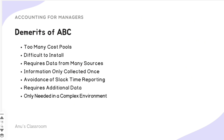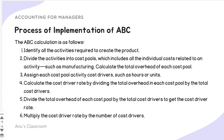Some demerits of ABC: since many activities go into delivering a final product, there will be many different cost pools, and assigning costs to each is very difficult. It requires data from many sources, avoidance of slack time reporting, and additional data collection. It is only practical in a complex environment. Overall, ABC costing is much more time-consuming and complex compared to traditional costing.